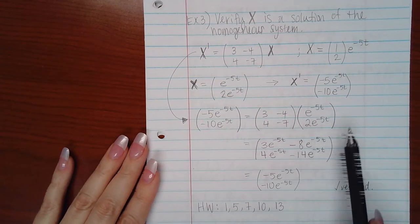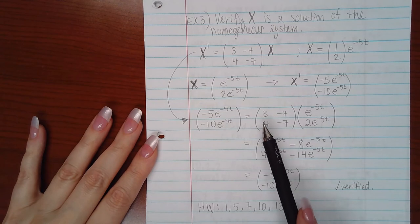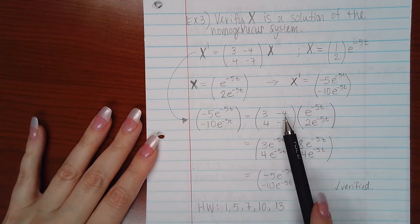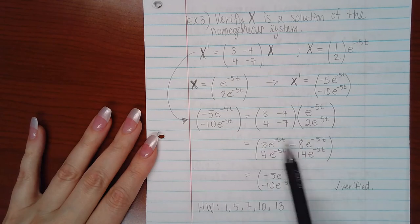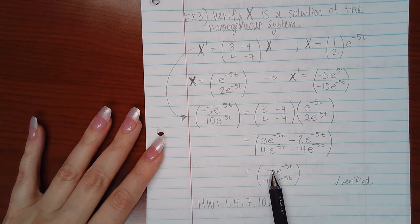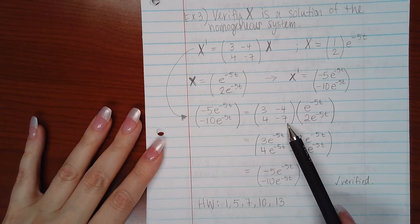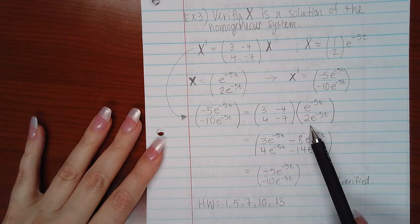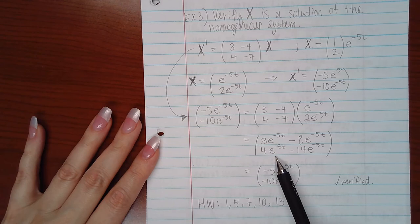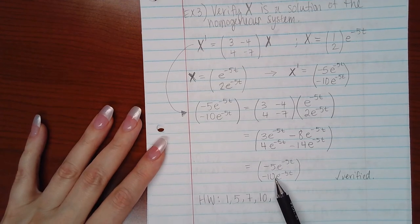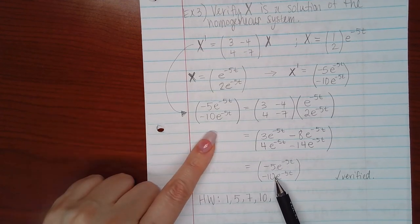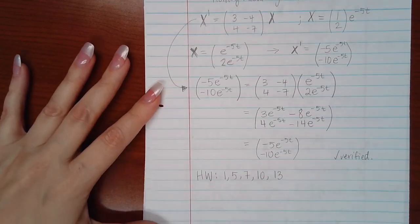Then I went ahead and multiplied the right-hand side. So 3 times e to the negative 5t, negative 4 times 2e to the negative 5t, and I got these two terms. When I combined them, I get negative 5e to the negative 5t. Then I multiplied 4e to the negative 5t, negative 7 times 2e to the negative 5t, and we ended up with 4e to the negative 5t minus 14e to the negative 5t. Combined the like terms, we got negative 10e to the 5t. This does match the left-hand side. Therefore, I have verified that this is, in fact, a solution.